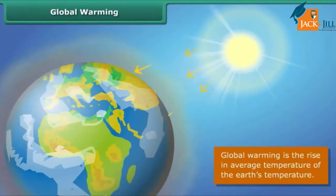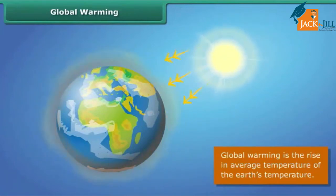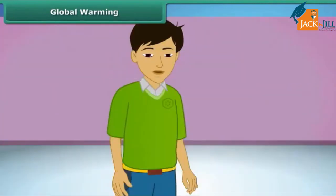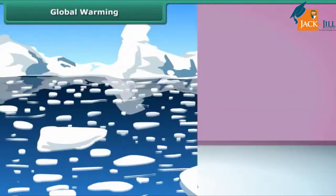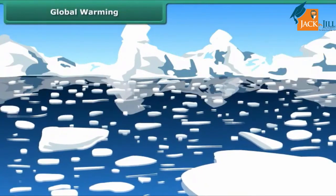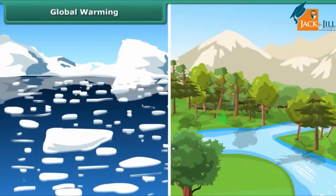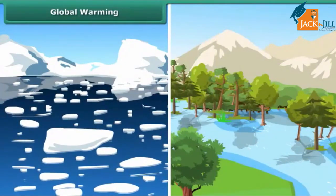Scientists say that greenhouse gases like carbon dioxide trap heat from the sun and increase the temperature of Earth's atmosphere. The consequences include melting of ice at the poles, causing sea levels to rise, which could flood low-lying areas, thus affecting the habitats of plants, animals, and people.